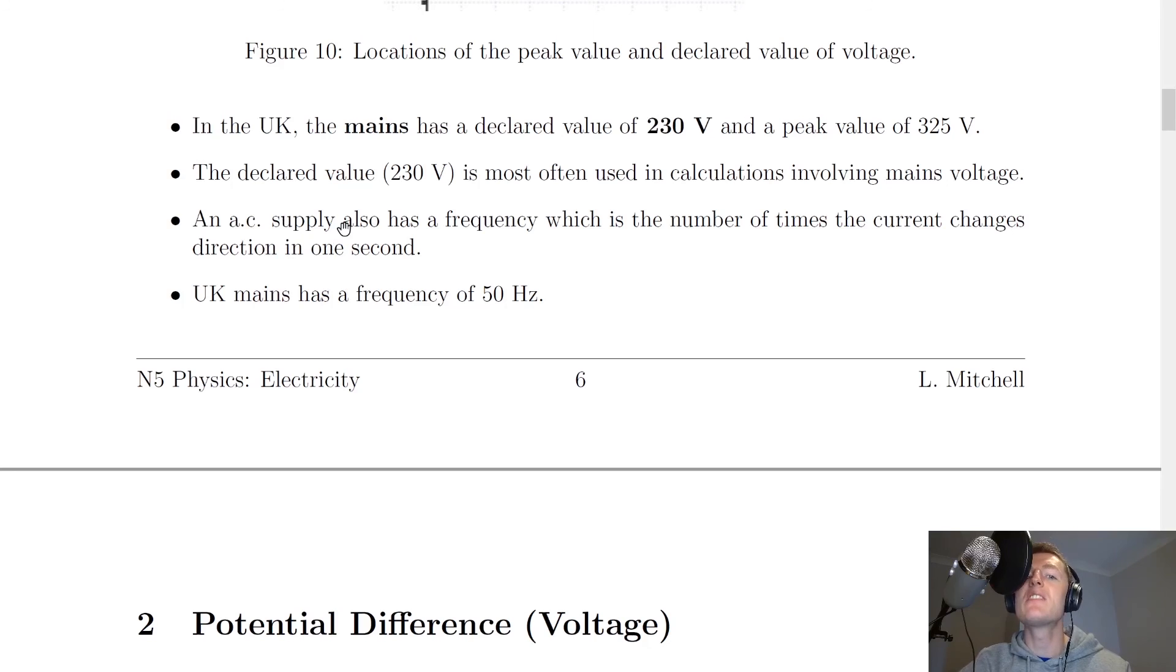Lastly, it says here an AC supply also has a frequency, which is the number of times the current changes direction in one second. UK mains has a frequency of about 50 hertz. So as we said earlier, this means that the current will change direction about 50 times each second.